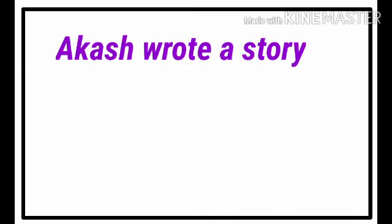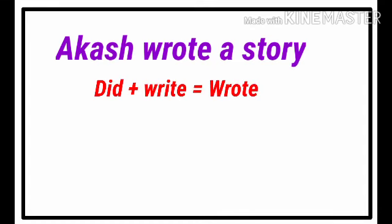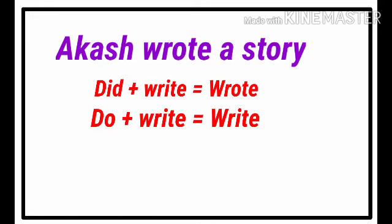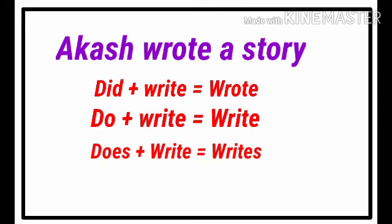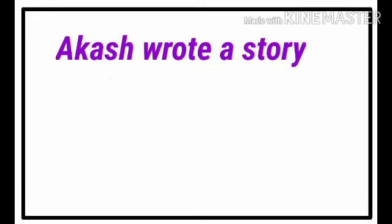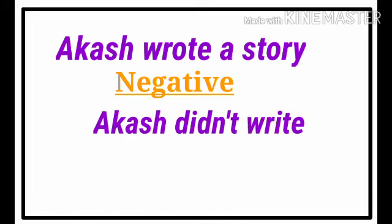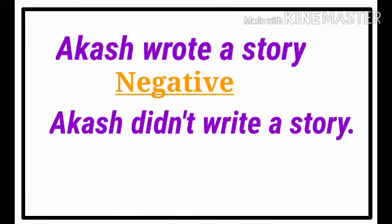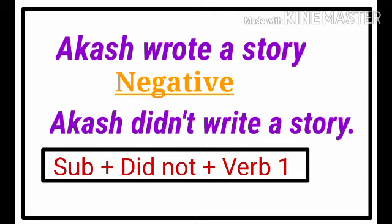'Akash wrote a story.' To understand this, 'wrote' means 'did + write.' Similarly, 'do + write' is 'write' and 'does + write' is 'writes.' So when we make it negative, we bring this hidden helping verb 'did' into light. So we have: 'Akash didn't write a story.' The structure is: subject plus did not plus V1. Whether the subject is singular or plural, we use 'did.'